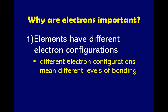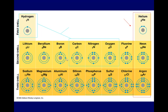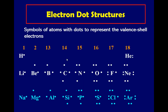Why are electrons important? Elements have different electron configurations, and different electron configurations mean different levels of bonding. Elements found in the periodic table have different electron configurations. We have what we call the electron dot structure — symbols of atoms with dots representing the valence shell electrons. The valence electrons are the outermost electrons of an atom. Since hydrogen has one valence electron, its electron dot structure is represented accordingly.